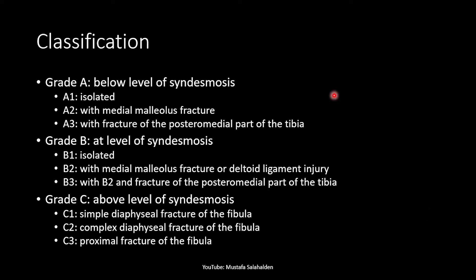Now let me explain the classification in detail. Grade A is below the level of the syndesmosis and it has three types: Type 1 is isolated, Type 2 is with a medial malleolus fracture, and Type 3 is a fracture of the posterior medial part of the tibia.